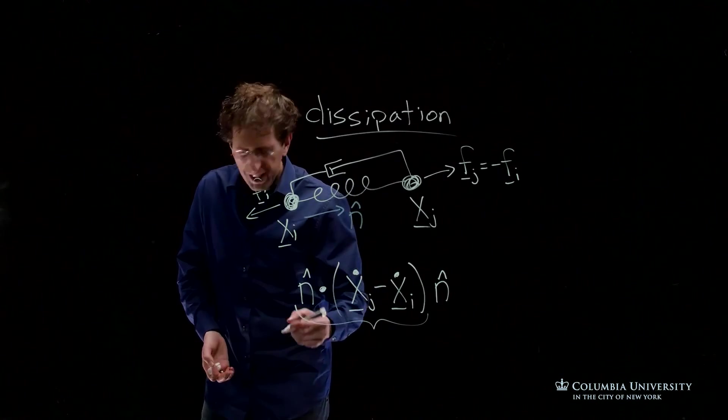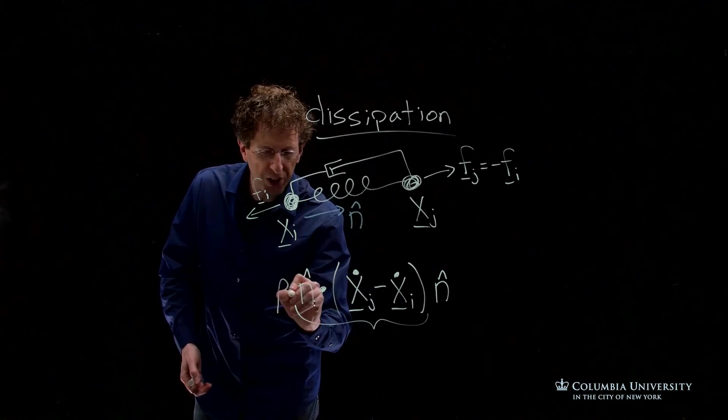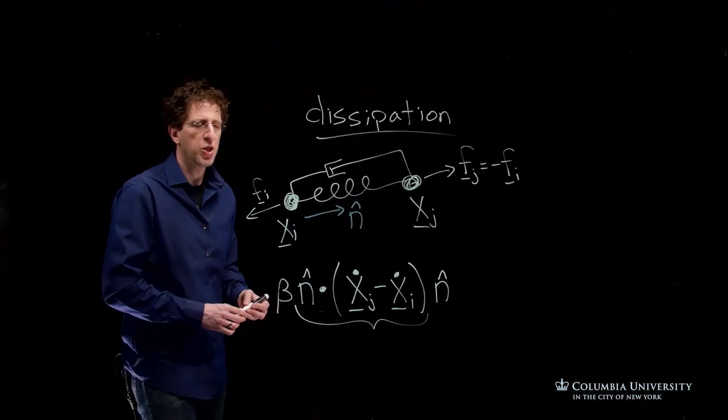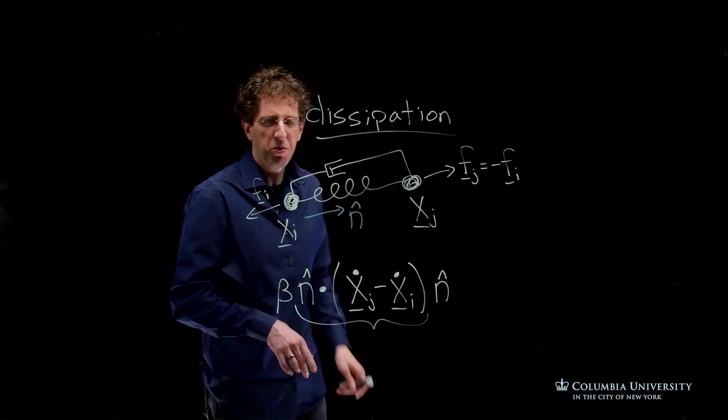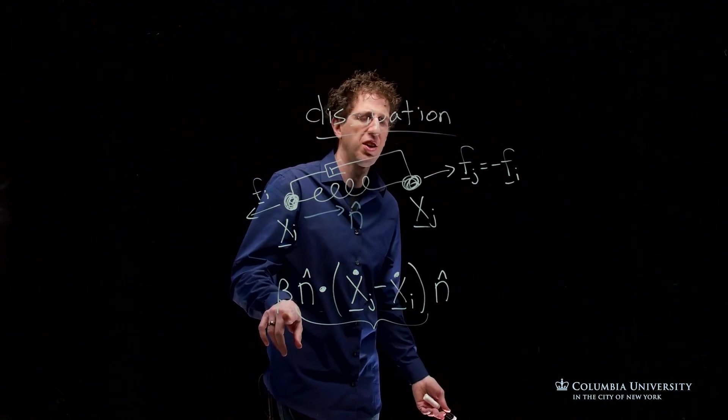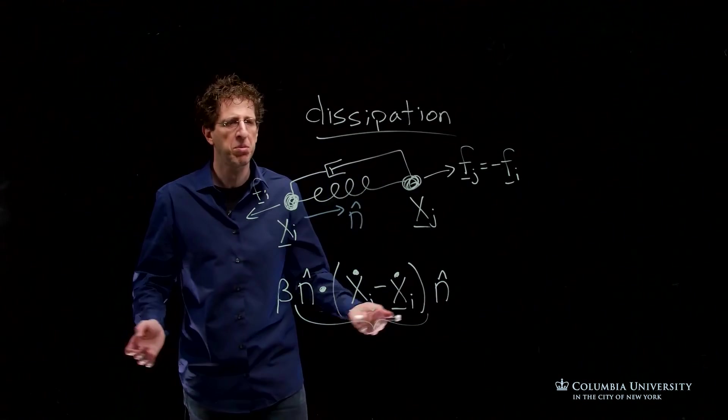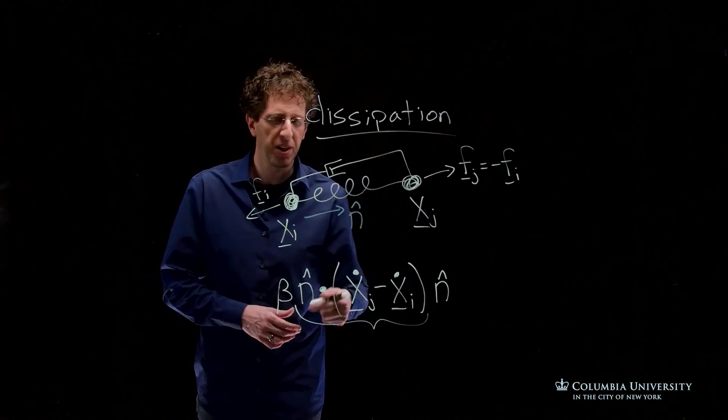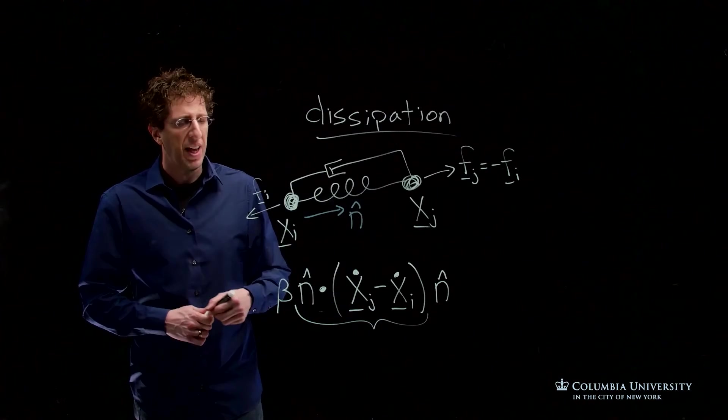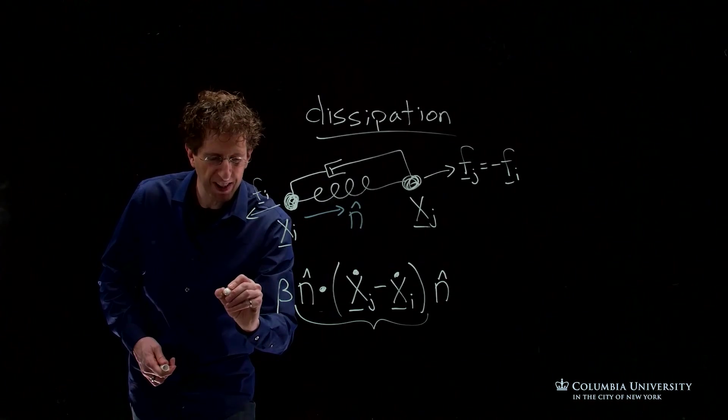As always, we'll have some kind of coefficient in front that modulates how much damping we have. If beta is equal to zero, the spring is completely undamped. If beta is high, the spring is very damp. Now we need to be careful about choosing the sign.